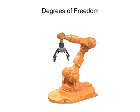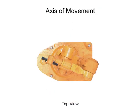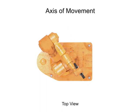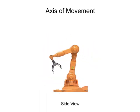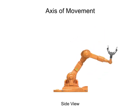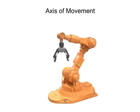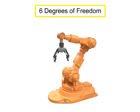Robots come in all different shapes and sizes, but are frequently classed by their degrees of freedom. Each direction of movement on the robot is considered an axis of movement. This robot rotates at the waist, bends forward and back at the shoulder, and moves vertically at the elbow. Each single movement axis is equal to one degree of freedom. This particular robot is equal to six degrees of freedom.